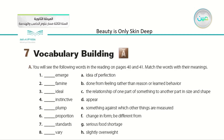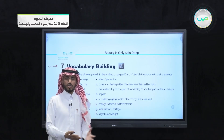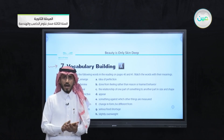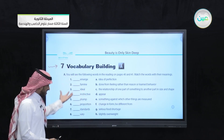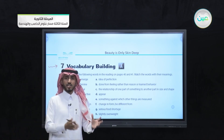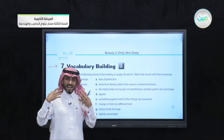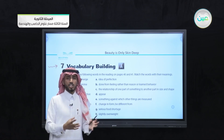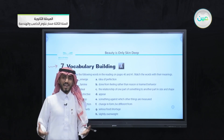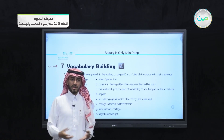Then we moved to the second part of the lesson, which is vocabulary building. In the vocabulary building, we listened to an essay about beauty. Eight words were extracted from that essay. You were asked to listen carefully and try to guess the meaning of each one of these words so you can understand the meaning from within the context.